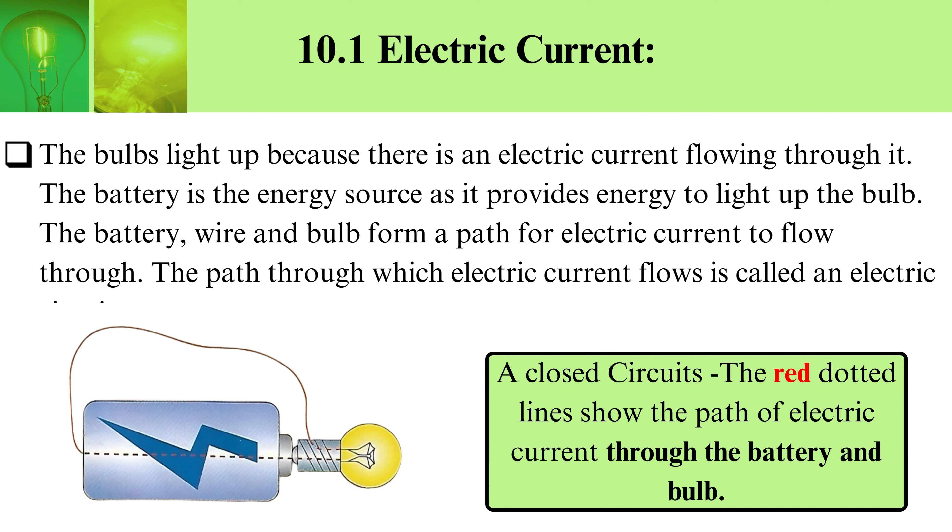Electric current: The bulbs light up because there is an electric current flowing through them. The battery is the energy source as it provides energy to light up the bulb. The battery, wire, and bulb form a path for electric current to flow through.